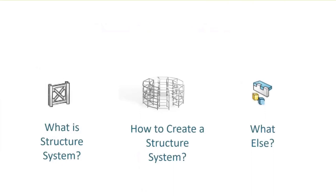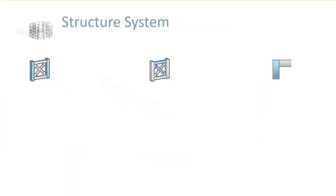That was a broad overview of what Structure System is and why it can be beneficial to use. Now let's jump in and see how it works. There are three main steps used to create it: the primary members, the secondary members, and then the corner management.